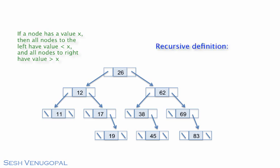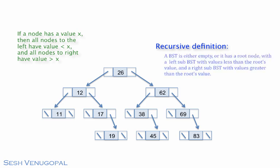Which means you can define a BST recursively as either empty or a root with a left sub BST and a right sub BST with values in the left BST less than that at the root and values in the right BST greater than that at the root.